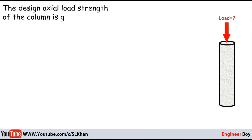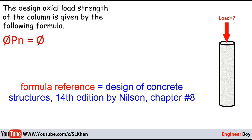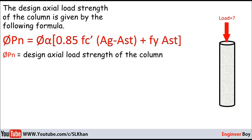To determine the design axial load strength of the column, we can use the following formula: ΦPn = Φα[0.85 fc'(Ag - Ast) + fy Ast], where ΦPn equals the design axial load strength of the column.